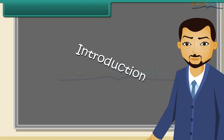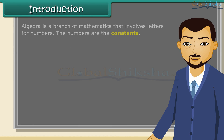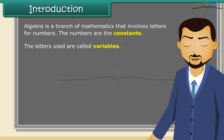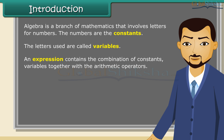Algebra is a branch of mathematics that involves letters for numbers. The numbers are the constants, and the letters used are called variables. An expression contains the combination of constants and variables together with the arithmetic operators.